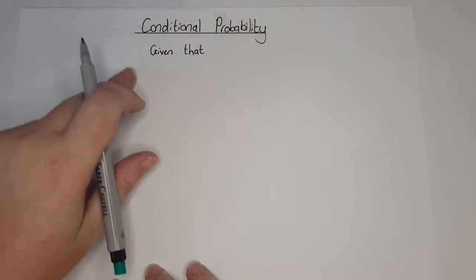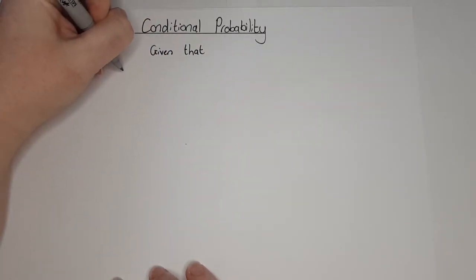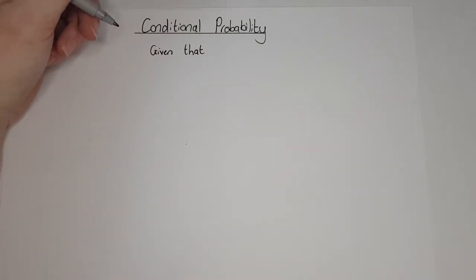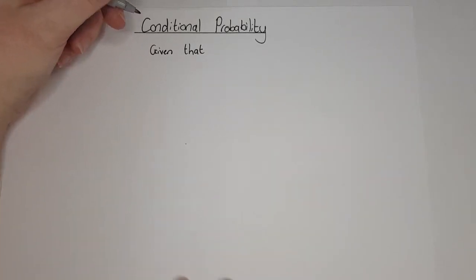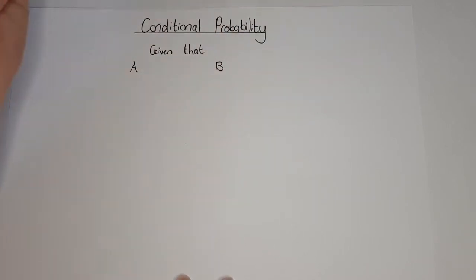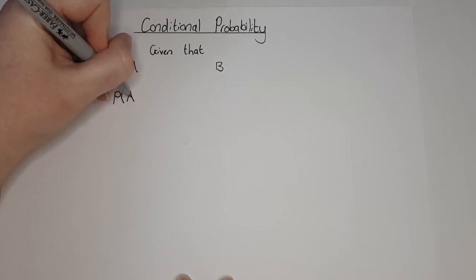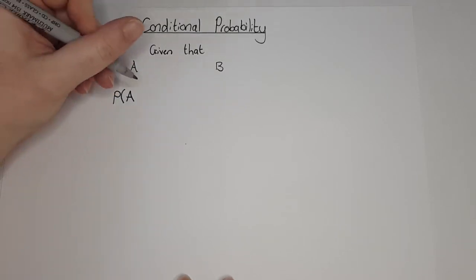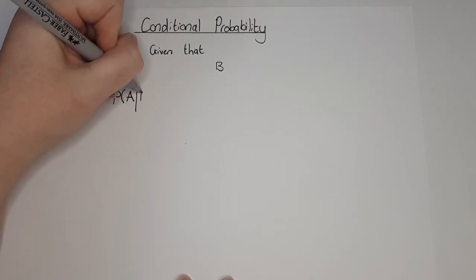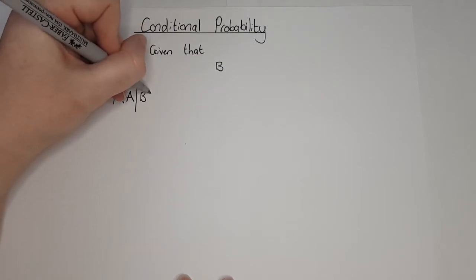The formula that we use for conditional probability is represented with a straight line. So if I say find the probability of A given that B, I write A, then put a straight line down for B. So I want the probability that I found A given that B.